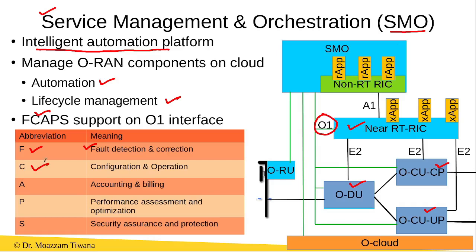C stands for configuration and operation, meaning the SMO uses the O1 interface to configure and operate these entities. The accounting and billing of these entities is also handled by the SMO using this O1 interface. The key performance indicators of these ORAN entities are collected via the O1 interface and assessed by the SMO. Security assurance and protection of these entities is also ensured by the SMO using the O1 interface.